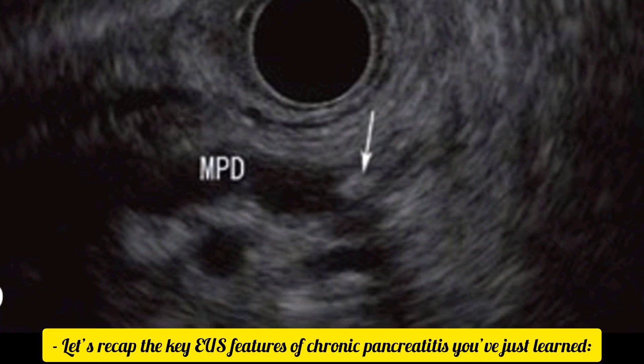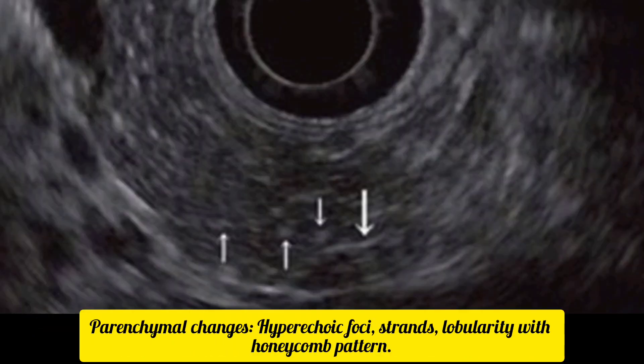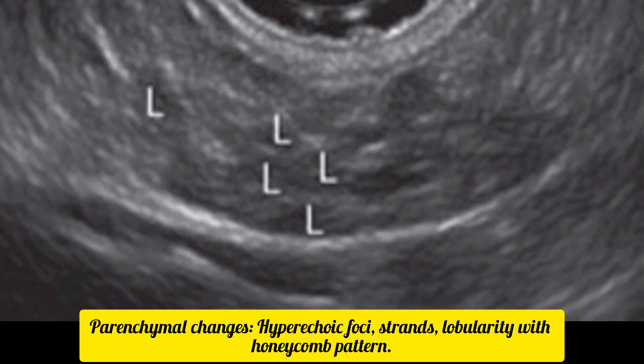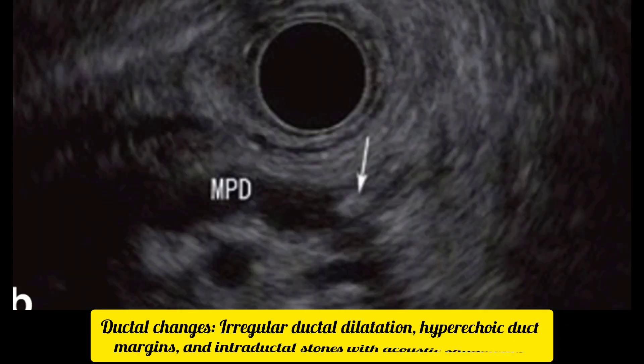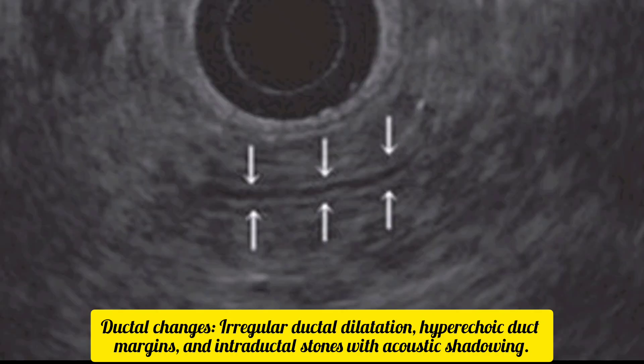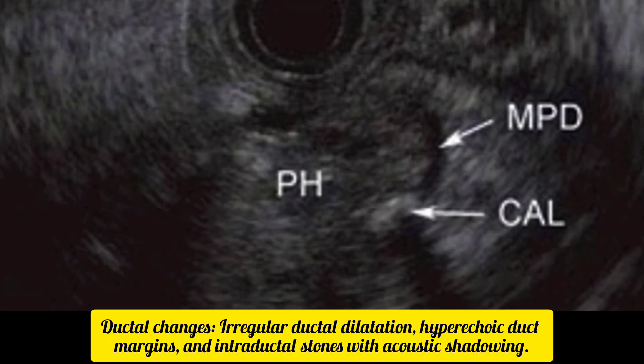Let's recap the key EUS features of chronic pancreatitis. Parenchymal changes include hyperechoic foci, strands, and lobularity with a honeycomb pattern. Ductal changes include irregular ductal dilatation, hyperechoic duct margins, and intraductal stones with acoustic shadowing.